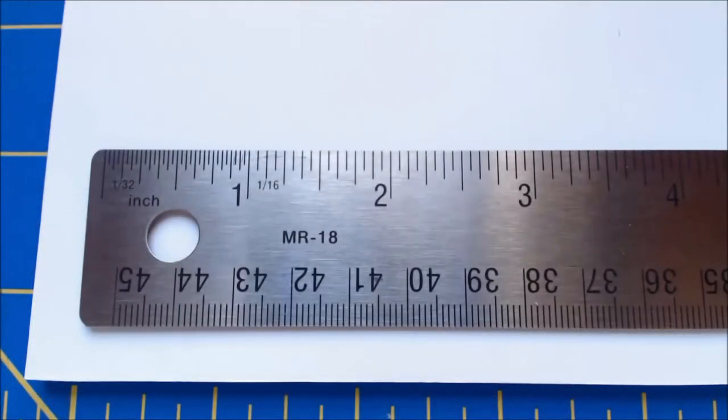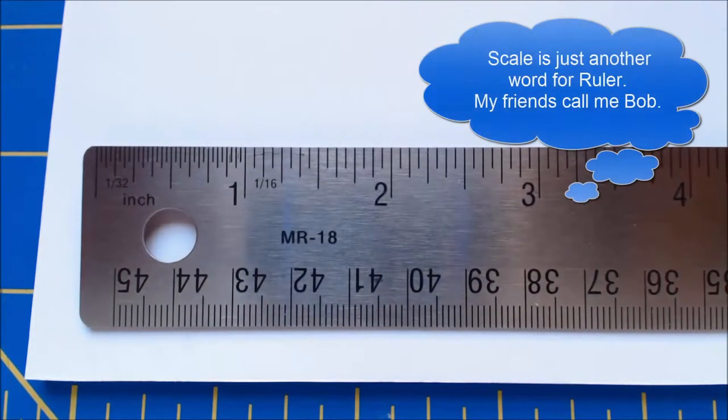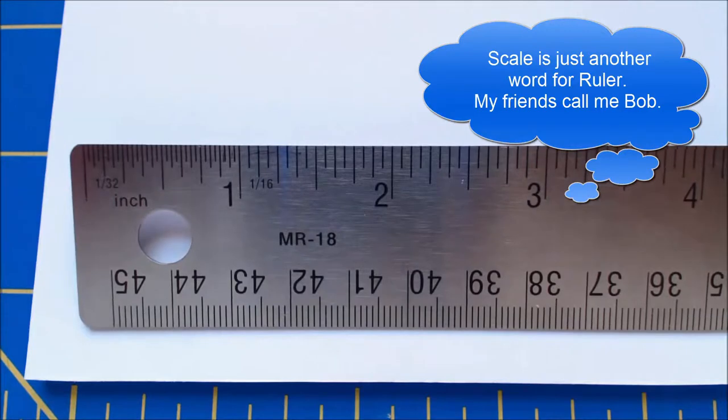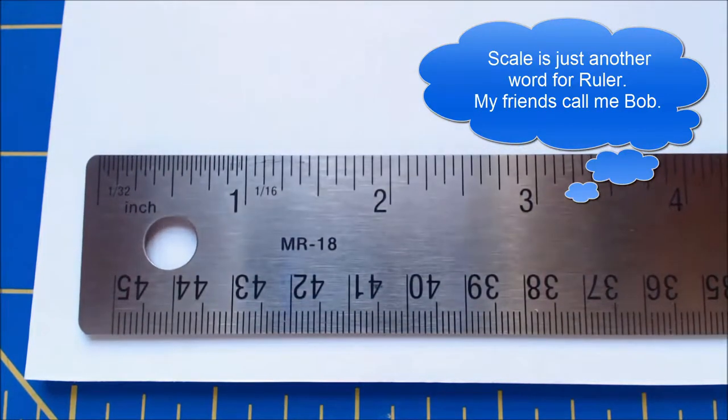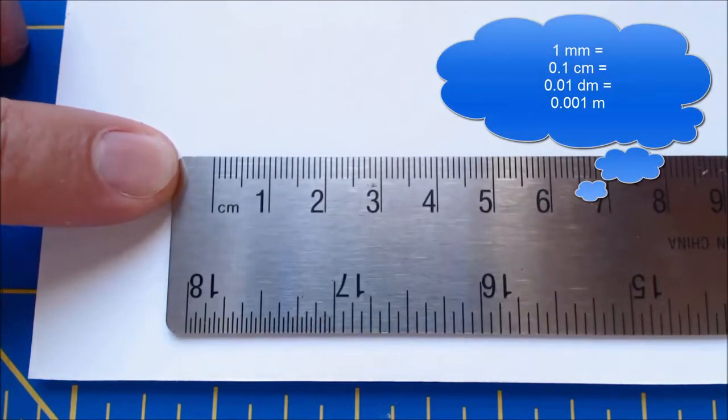Before we begin to mark and lay out our developed cube pattern, I want to talk a little bit about how to read and measure with a scale. This scale that I have in front of me, or a ruler, is a dual unit ruler, which means it has inches on one side and centimeters on the other side.